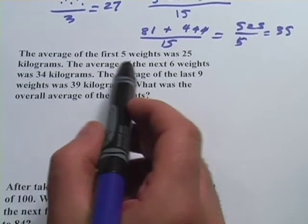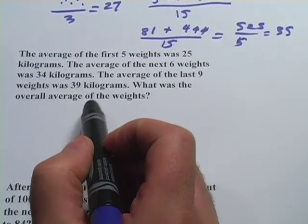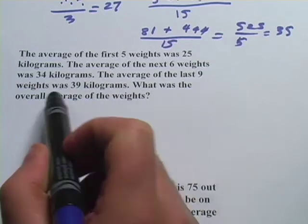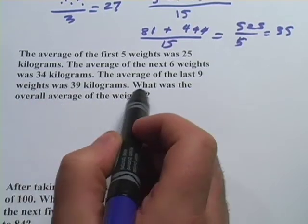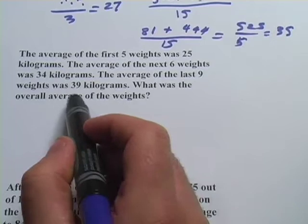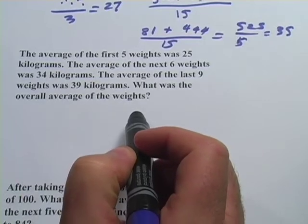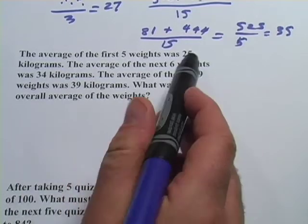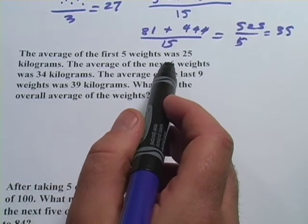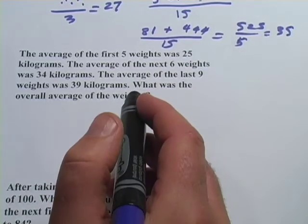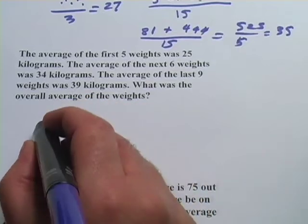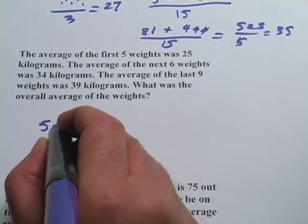This one says, the average of the first five weights was 25 kilograms. The average of the next six weights was 34 kilograms. The average of the last nine weights was 39 kilograms. What was the overall average? So I'm going to say the first five weights were all 25. Since they averaged 25, I can say that. So I would add them together five times, or in shorthand, 5 times 25.